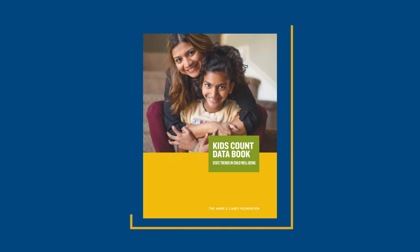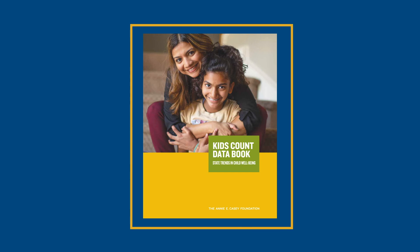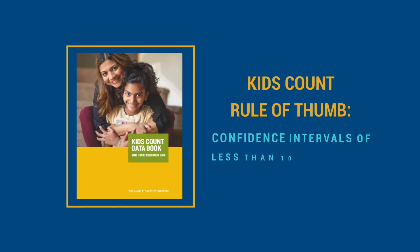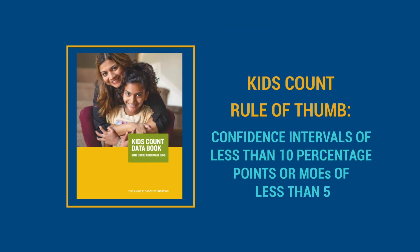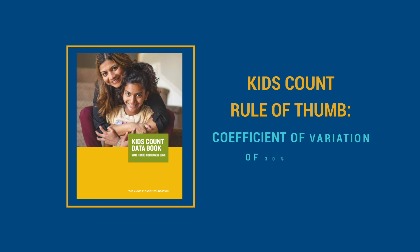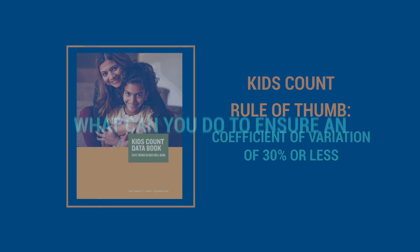One strategy used for Kids Count, a project of the Annie E. Casey Foundation, is to look at the width of the confidence interval around an estimate. Confidence intervals of less than 10 percentage points are considered reliable. You can also use the coefficient of variation. In general, CVs less than 30% indicate more reliable data, though some organizations and data sources report estimates with CVs as large as 40% or even 60%.